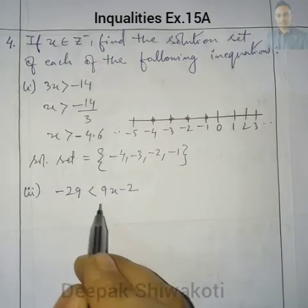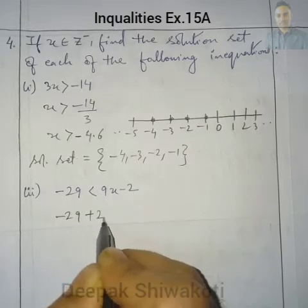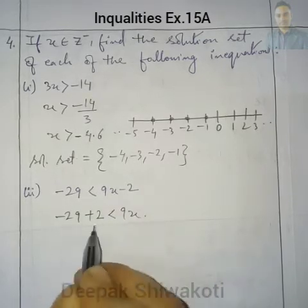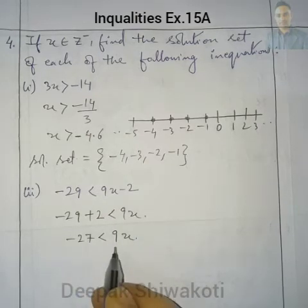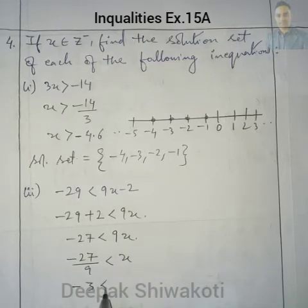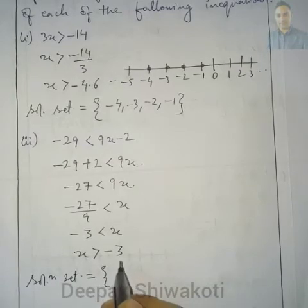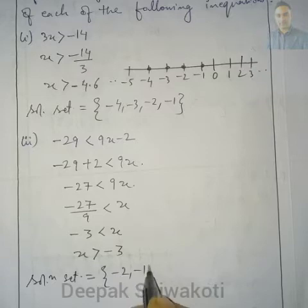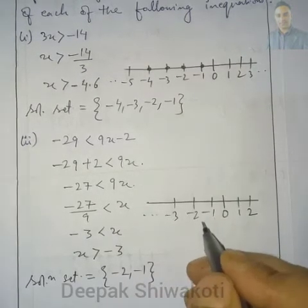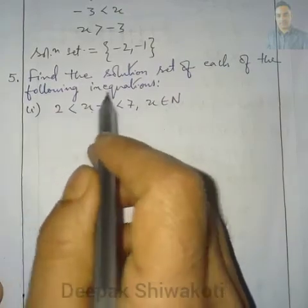Question 2: -29 + 2 < 9x, giving -27 < 9x. Dividing by 9: -3 < x, meaning x > -3. From negative integers, the solution set is {-2, -1}. On the number line, we mark -2 and -1.